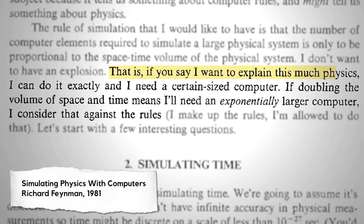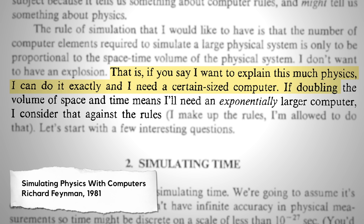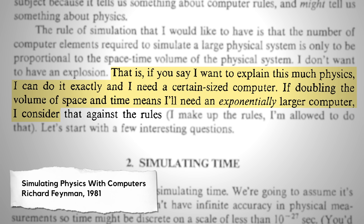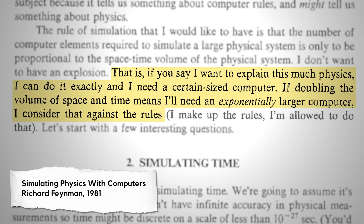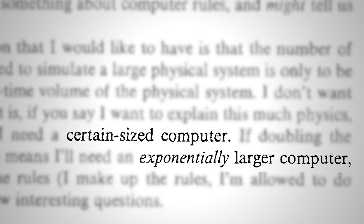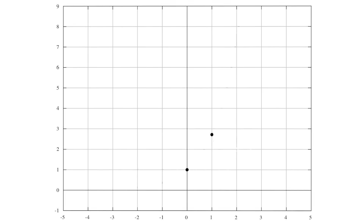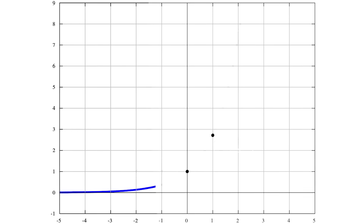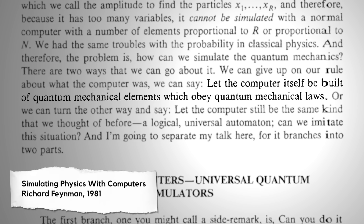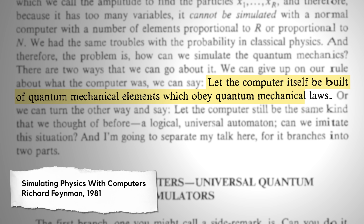As he put it: 'If you want to explain this much physics, I can do it exactly and I need a certain sized computer. If doubling the volume of space and time means I'll need an exponentially larger computer, I consider that against the rules.' That's followed by a comment: 'I make up the rules, I'm allowed to do that.' Most conventional computers fail this rule when trying to simulate nature, because every time you add just one more particle to keep track of, you're adding a near infinity of new places it could be, and it becomes exponentially harder to compute. Feynman says that to get around this we should let the computer itself be built of quantum mechanical elements which obey quantum mechanical laws.